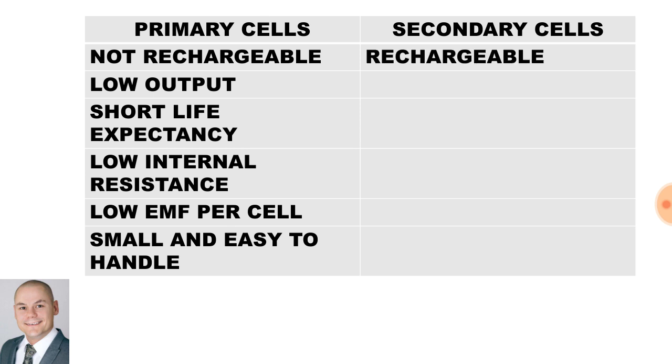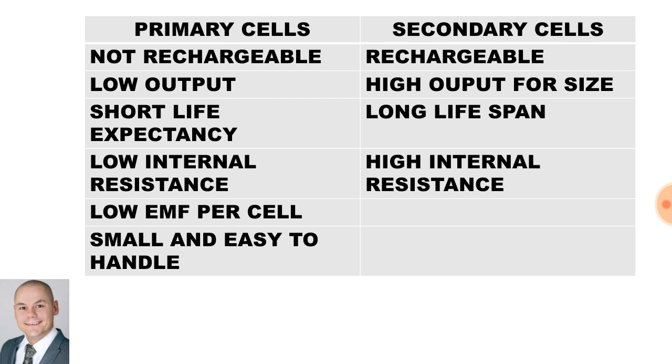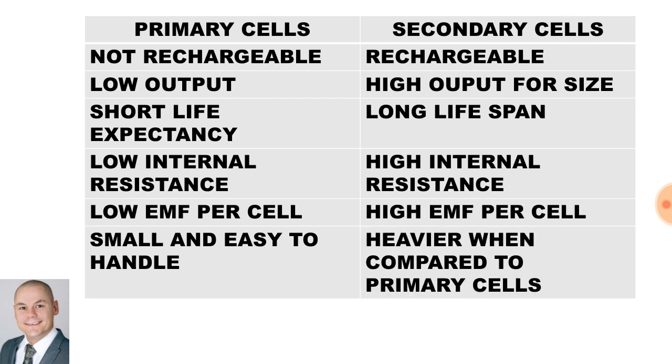Secondary cells such as a cell phone battery are rechargeable. They have a higher output, longer lifespan, higher internal resistance, a higher EMF per cell. However, they are heavier when compared to primary cells.